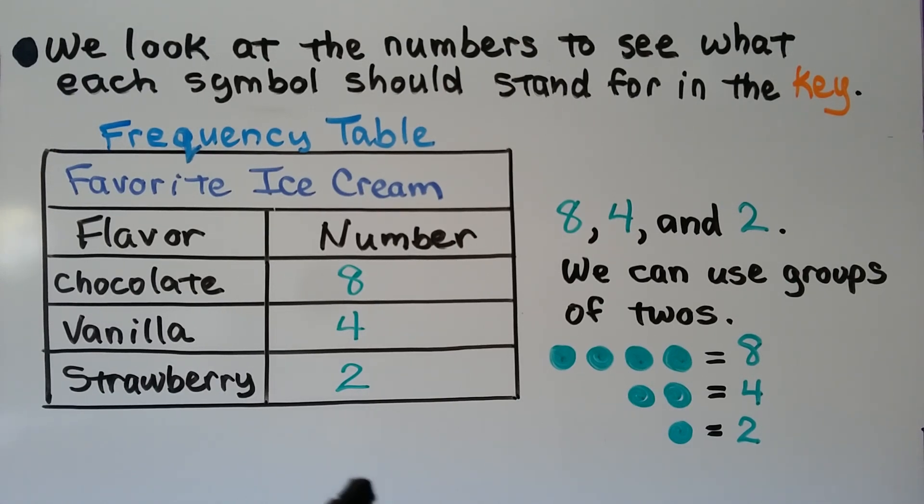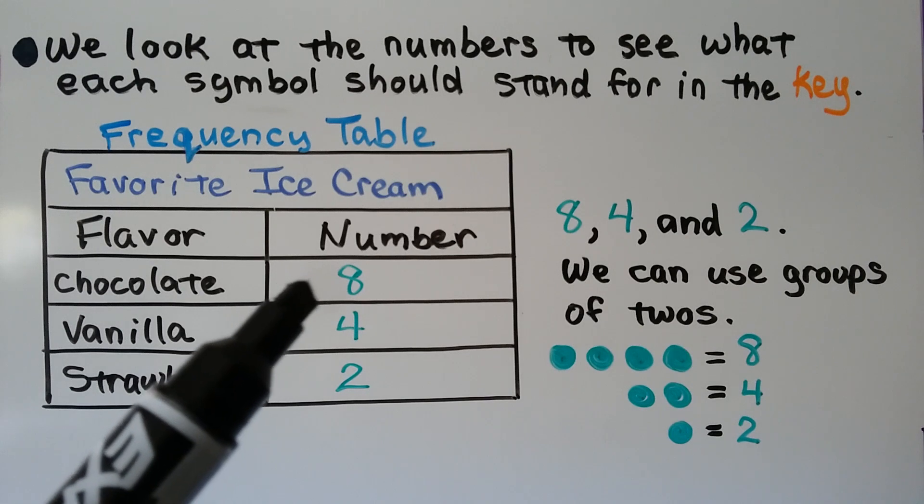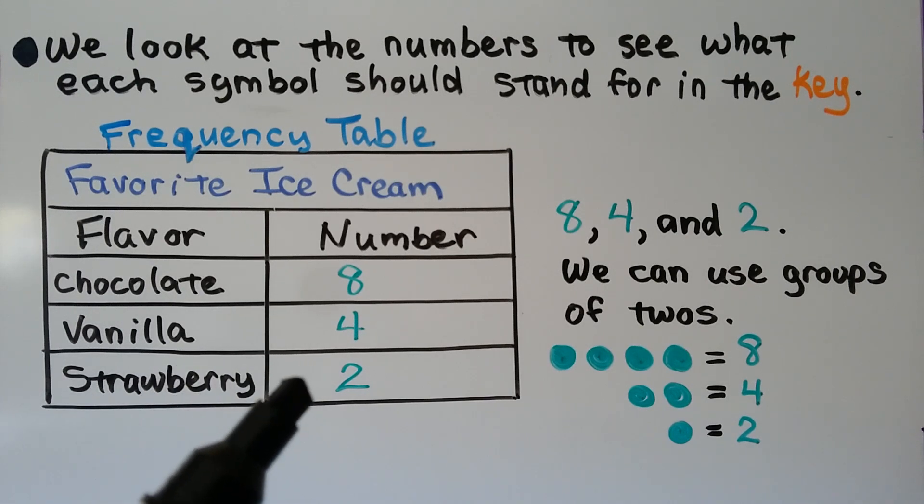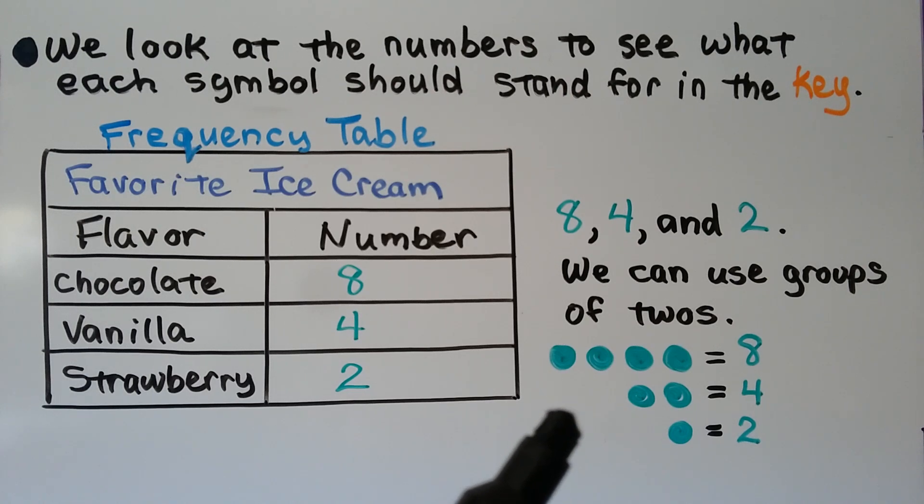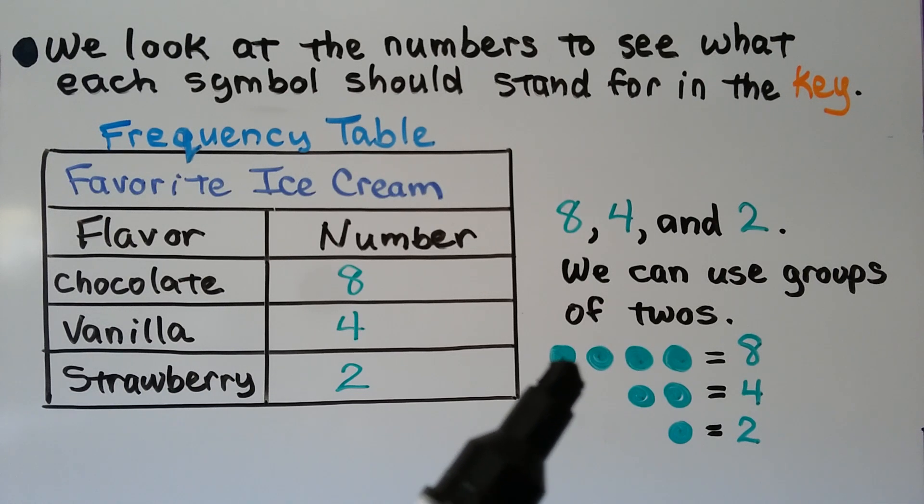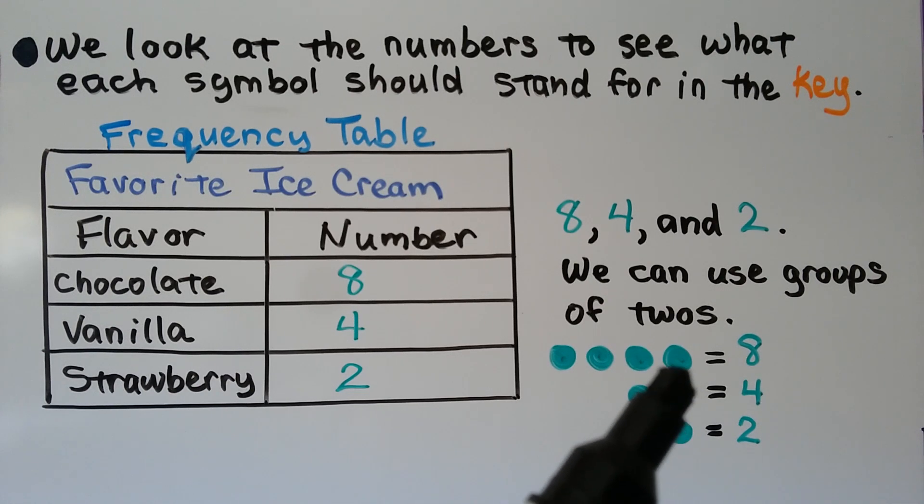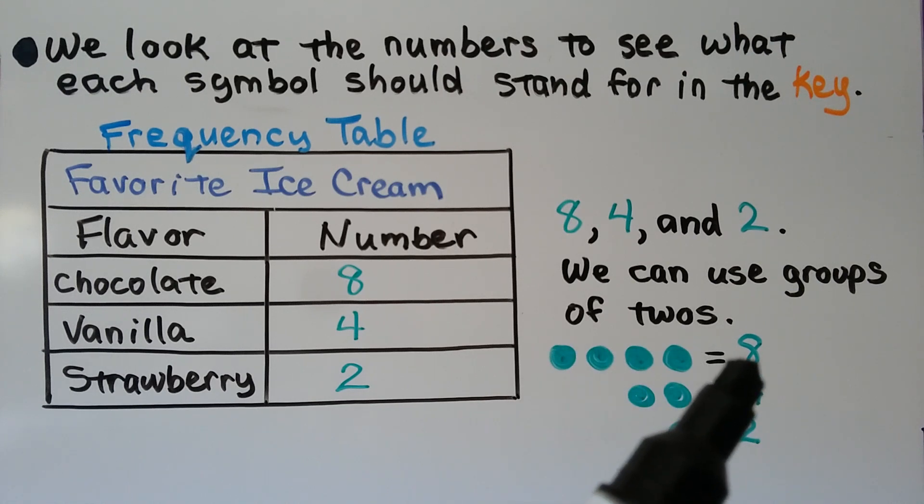But mine are going to represent two people for each green dot. I have 8 chocolate, 4 vanilla, and 2 strawberry that people said they liked. Because I have an 8, a 4, and a 2, we can use groups of twos. We can skip count: 2, 4, 6, 8. So four green dots for my picture graph would equal 8 people that like chocolate.